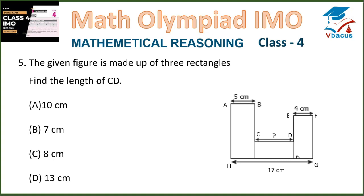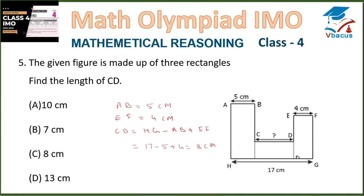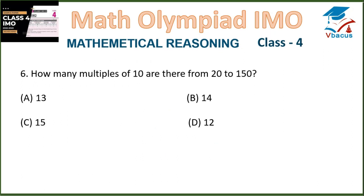Question 5: The given figure is made up of 3 rectangles. Find the length of CD. AB is given as 5 cm and EF is given as 4 cm. The length of CD equals the complete length of HG minus AB plus EF, which is 17 minus 5 plus 4, equal to 8 cm.